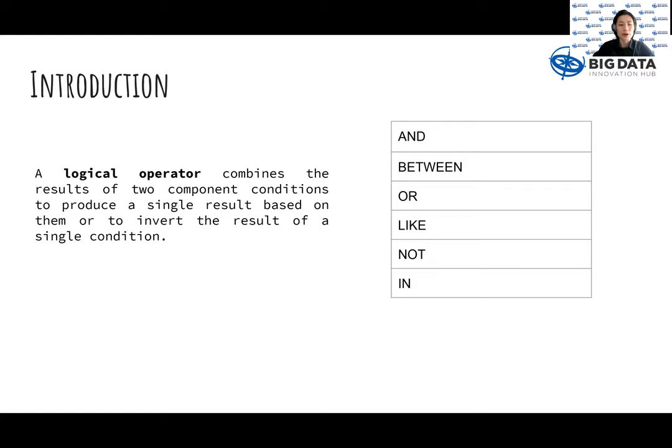A logical operator combines the results of two component conditions to produce a single result based on them, or to infer the result of a single condition. We have a total of six logical operators to talk about.